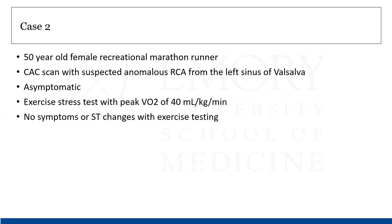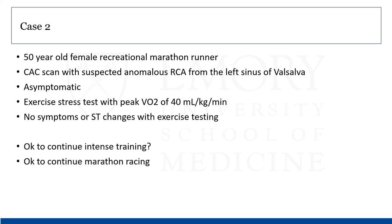The next case is a 50-year-old female recreational marathon runner. She had a CAC scan done as preventive care that didn't show significant CAC but showed suspicion for anomalous right coronary off the left sinus of Valsalva. She is completely asymptomatic and running about 40 to 50 miles a week. We did an exercise stress test — she had an excellent VO2 max, no symptoms, and no ST changes. However, she did some reading and was concerned about her anomalous right coronary. Her questions: is it okay to continue training and racing, given that she'll be reaching peak exertion during races?